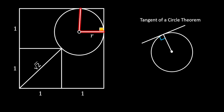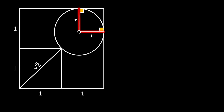We can rotate this radius vertically, and the same rule applies — the tangent of a circle theorem tells us this angle at the top is also 90 degrees. The angle at the top right of the square is also a right angle. So the newly formed figure has four right angles and two equal sides, making it a square. Pulling its diagonal gives us a diagonal equal to r times square root of 2.